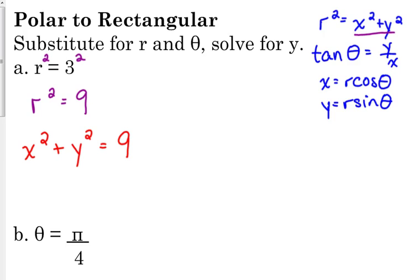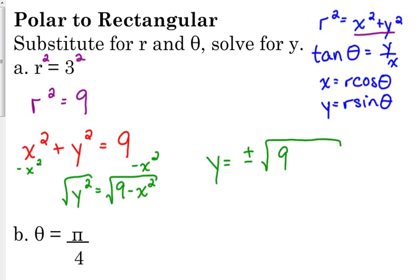If we did want to solve this for y so that we could graph it, we would subtract the x squared from both sides and y is squared so we take the square roots. This right here with the plus and minus in front of it is not a function. When it has the plus and the minus in front of it, this is not a function because it's going to fail the vertical line test.